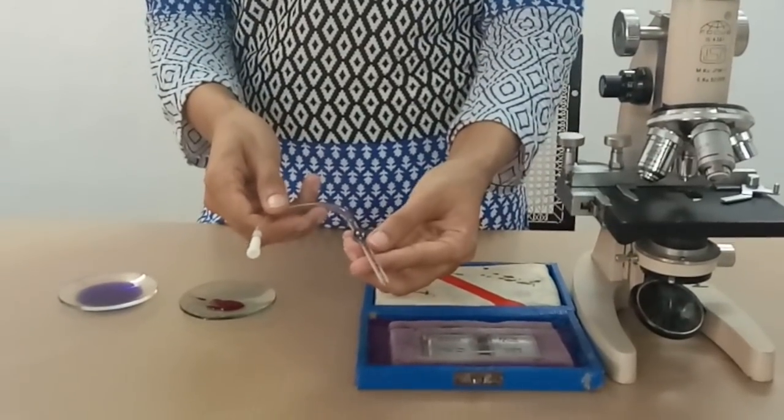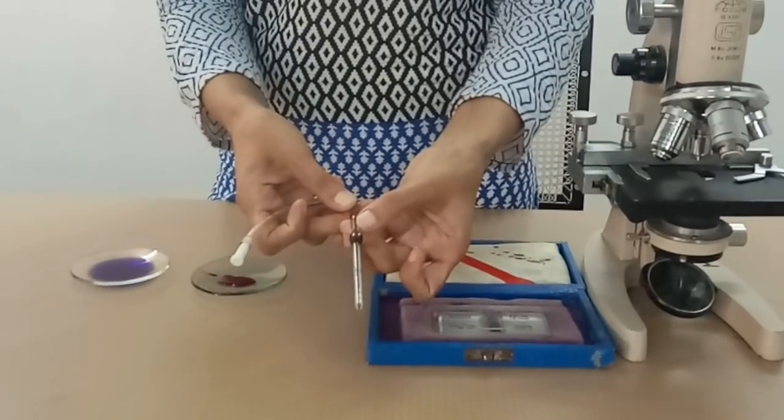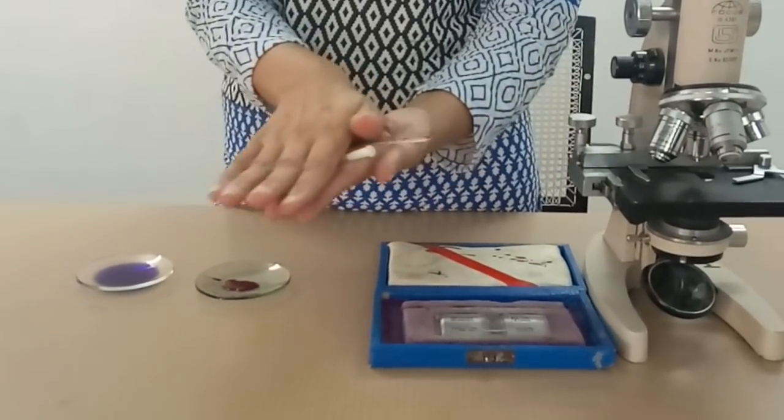Suck the Turk's fluid to the mark 11. Mix the content of the bulb thoroughly for 3 to 4 minutes.